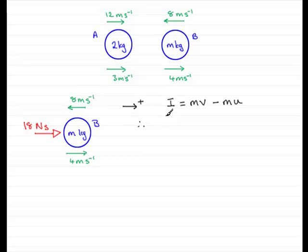what we've got is 18. It acts in the positive sense. So we've got 18 equals m, we don't know. V, the final velocity, well that's 4 meters per second and it acts in the positive sense. So we can write 4 there.